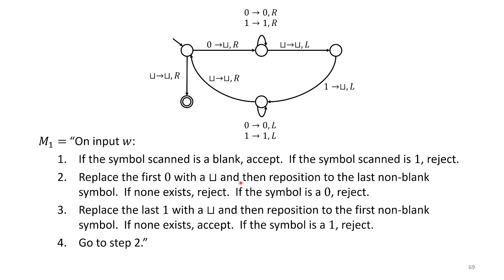Step two: replace the first zero with a blank, then reposition to the last non-blank symbol. That covers all the 'move to the right' logic — reposition to the last non-blank symbol by moving right until we see a blank, then once more to the left. If none exists, reject, because we've crossed off a zero but had no one to cross off. If the symbol is a zero, reject for the same reason. Otherwise if it is a one, replace the last one with a blank.